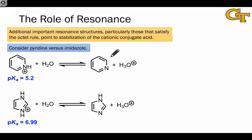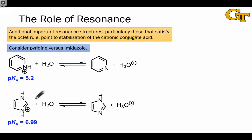In many aromatic heterocycles — the azoles are particularly famous for this — the presence of multiple heteroatoms leads to multiple resonance structures in which positive charge can be shared over the multiple heteroatoms. This tends to stabilize charged intermediates due to resonance delocalization. These two examples illustrate this effect nicely: consider pyridine versus imidazole. The pKa values indicate that protonated pyridine is significantly more acidic than protonated imidazole.